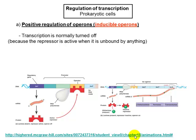There is a chicken-and-egg problem: you need transcription of the permease gene to get allolactose into the cell, but if you are not transcribing at all, allolactose cannot enter. If allolactose cannot get inside the cell, it will never bind the repressor to inactivate it. So how do you solve the problem? You need the protein to get allolactose in, but you cannot make the protein without allolactose inside.